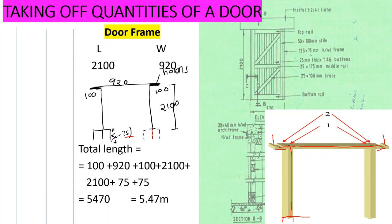Now let's find the total length. We have 100 plus 920 plus 100 plus 2100 this side, 2100 this side, 2100, and then plus 75, and then plus 75. That is giving us 5470, that is 5.47 meters. So that is the total length of the door.